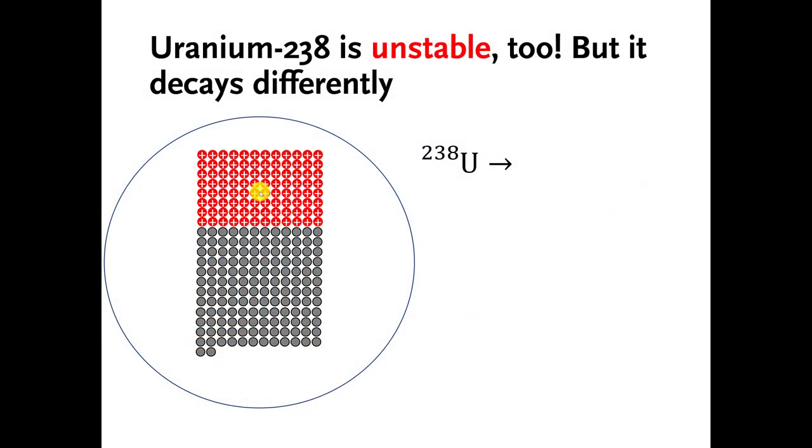All right, welcome back everybody. We are going to do a different kind of decay now. This is a uranium atom. In particular, this isotope of uranium is uranium-238. Hopefully you appreciate that this was a giant pain in the ass to draw on the computer. And again, I'm going to tell you that uranium-238 is also unstable. What I mean by that is if you wait around long enough, it's going to turn into something else.